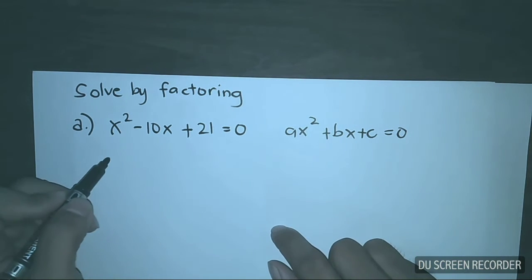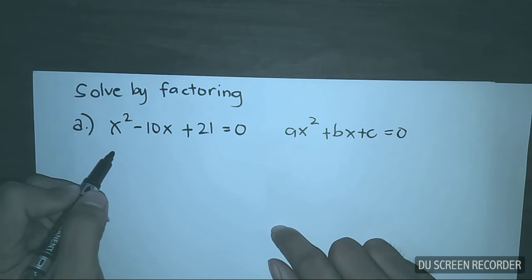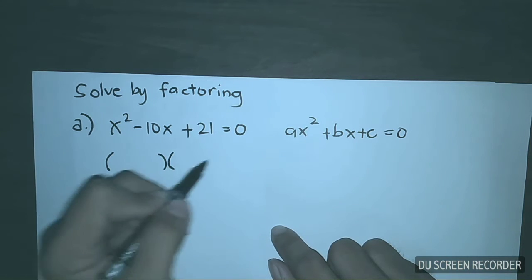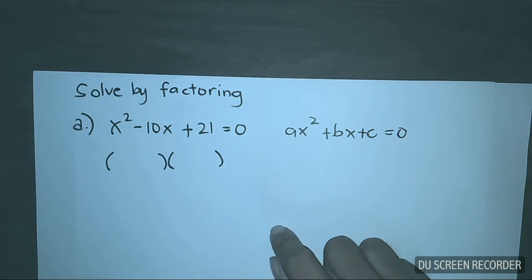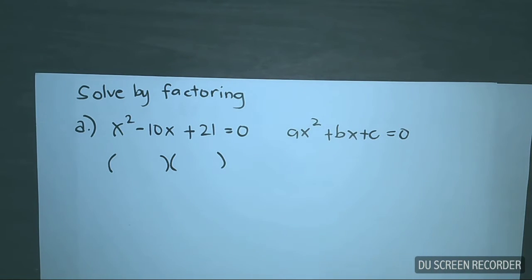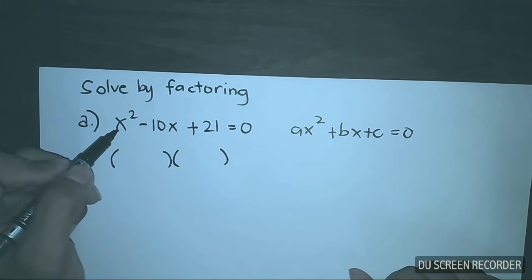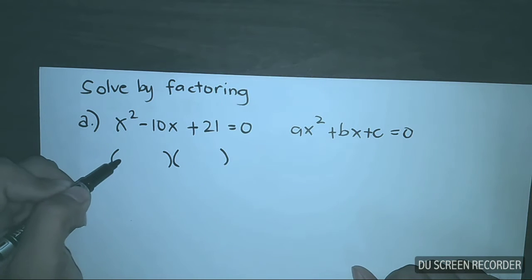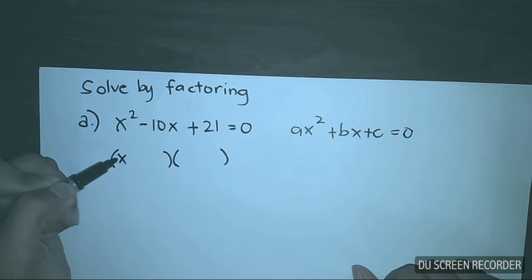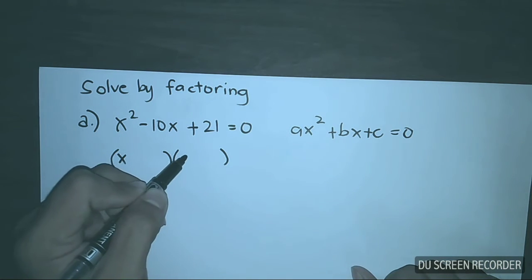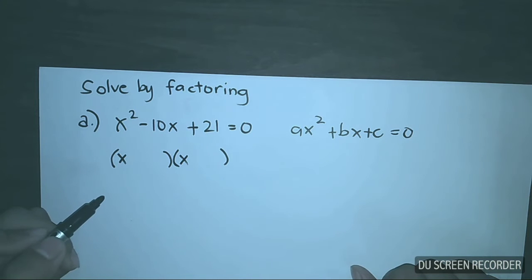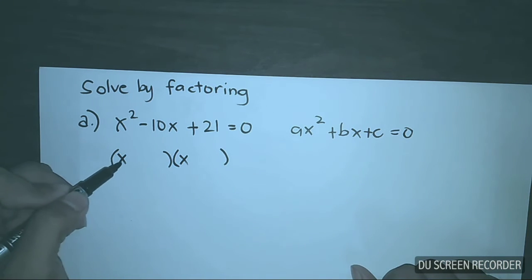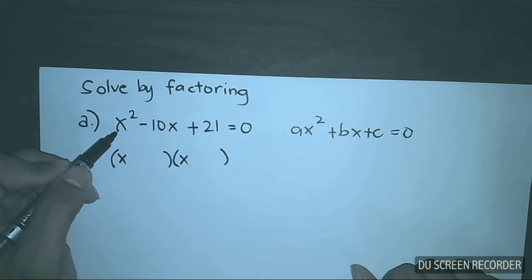The next step is you need to prepare two parentheses for the factors of this equation. Then, since the first term is x squared, the first term of the two factors are both x, because x times x will give you x squared.